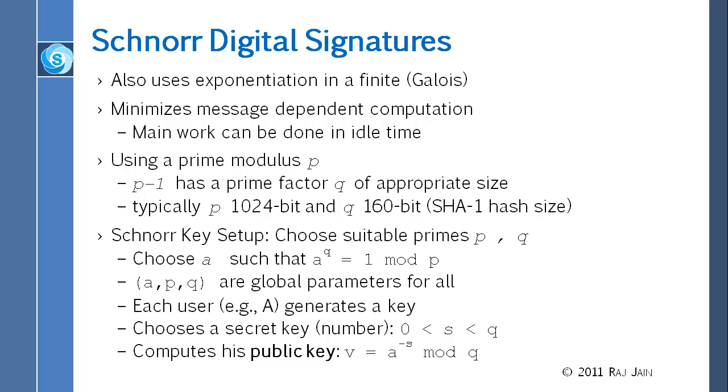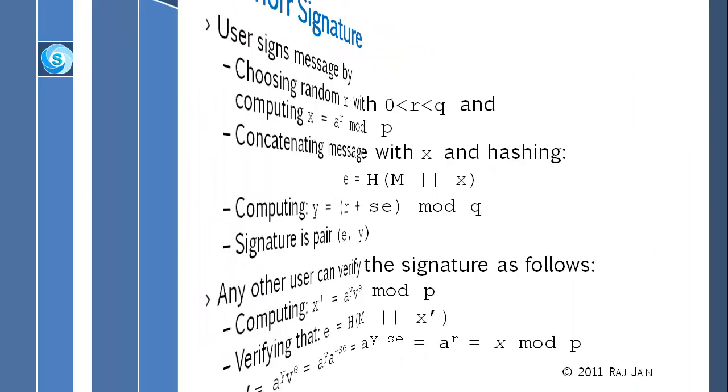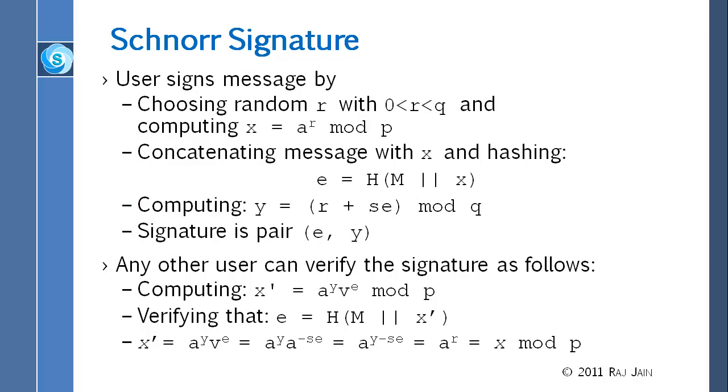Now, each user, when they want to sign a message using these parameters, they select a secret key S and calculates a public key based upon that S, which is A raised to minus S mod Q. And you sign the message with random number R, which is very similar to ElGamal. In ElGamal also we had similar things that people had their keys and then they had a message key. In this case R is the message key. And A raised to R mod P, which is very similar to S1.